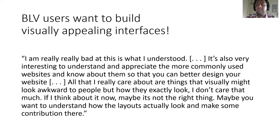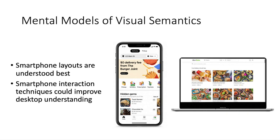Here, our participant expresses his desire to contribute to visual semantics. Our participants did have some mental models of visual semantics — the strongest being of smartphone apps and the weakest being of websites as they would appear browsed from a desktop. This presents interesting implications for how we might convey understanding that exists on smartphones to teach graphical user interfaces on desktop.